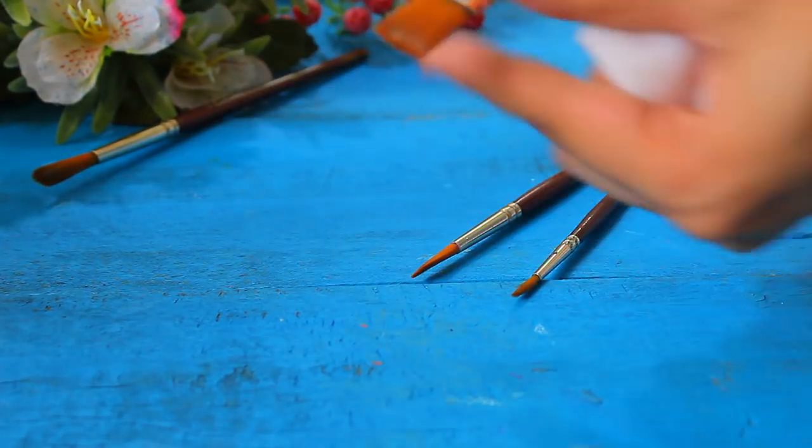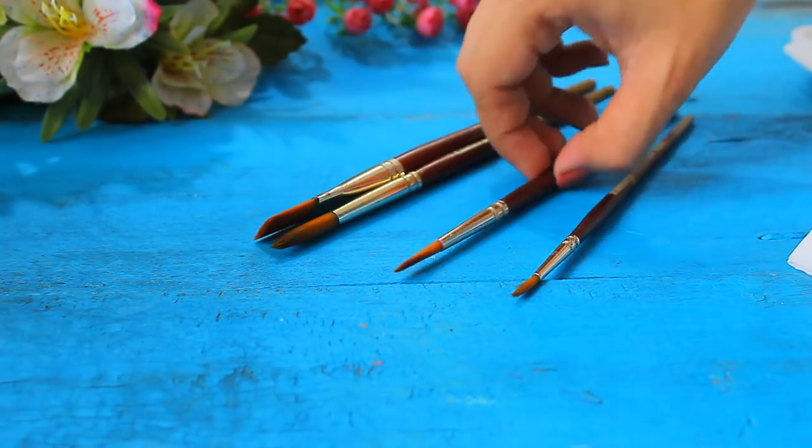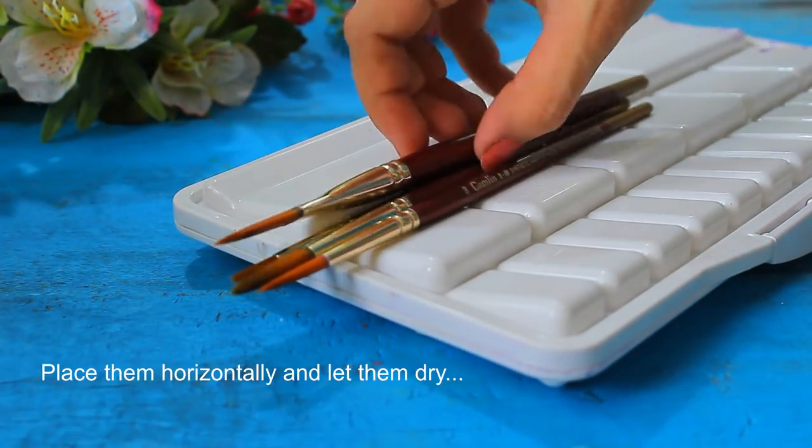Now remove the excess water from the brush using tissue paper and give its original shape to the brush. Let them dry on an elevated surface naturally.